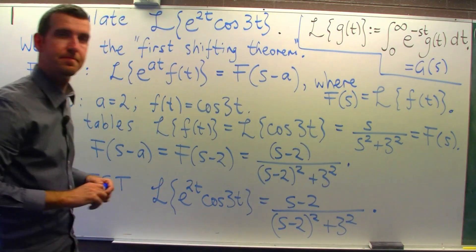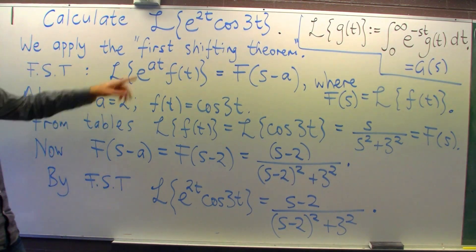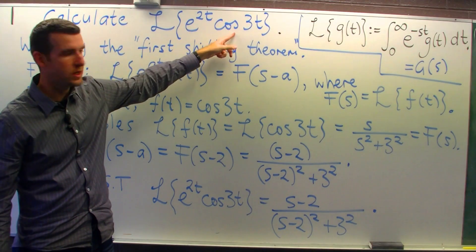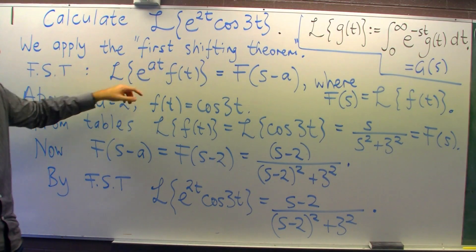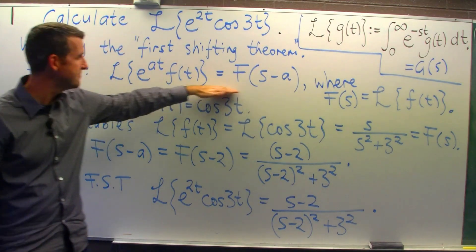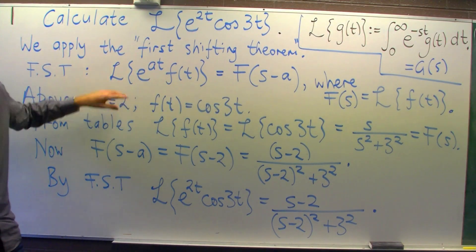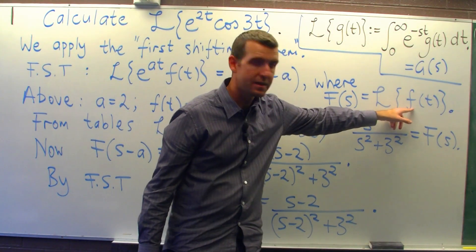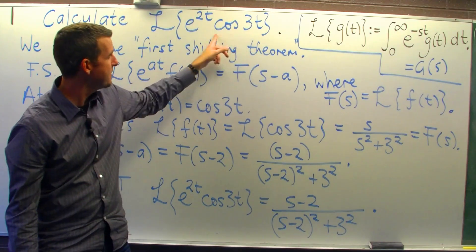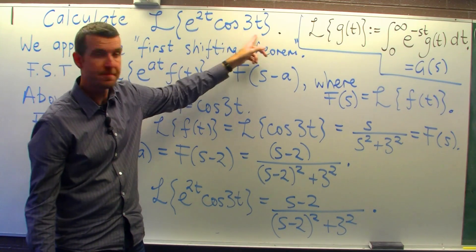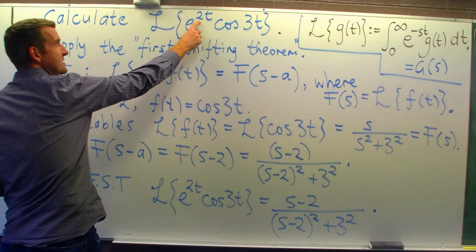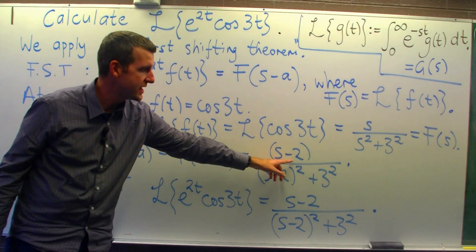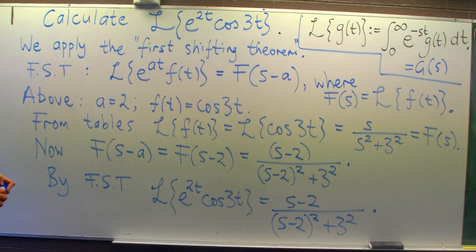Okay? So notice the sequence of events. We recognize that we had an exponential function times a function of t. We realize that we could apply the first shifting theorem, which is here. To apply that, we work out the Laplace transform of this part of the function. Okay? Then we shift it. In this case, we shifted it two units to the right because you have a minus 2 here.